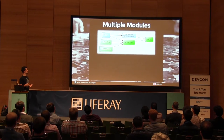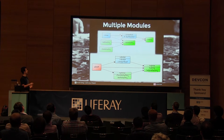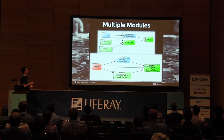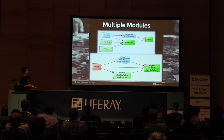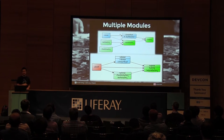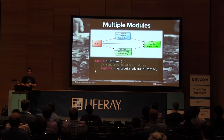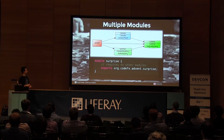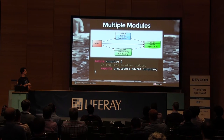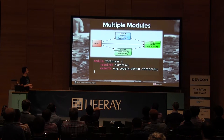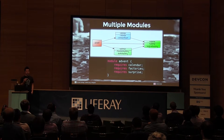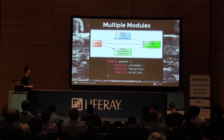Now let's create multiple modules. I've decided to have one module for the calendar, one for the surprise API, one for the factories, and one for the main method. The module 'surprise' has no dependencies and exports the package where the surprises are. Calendar and factories both require 'surprise' and export their respective packages. 'Advent' exports nothing because nobody calls into it, and it depends on all three other modules.